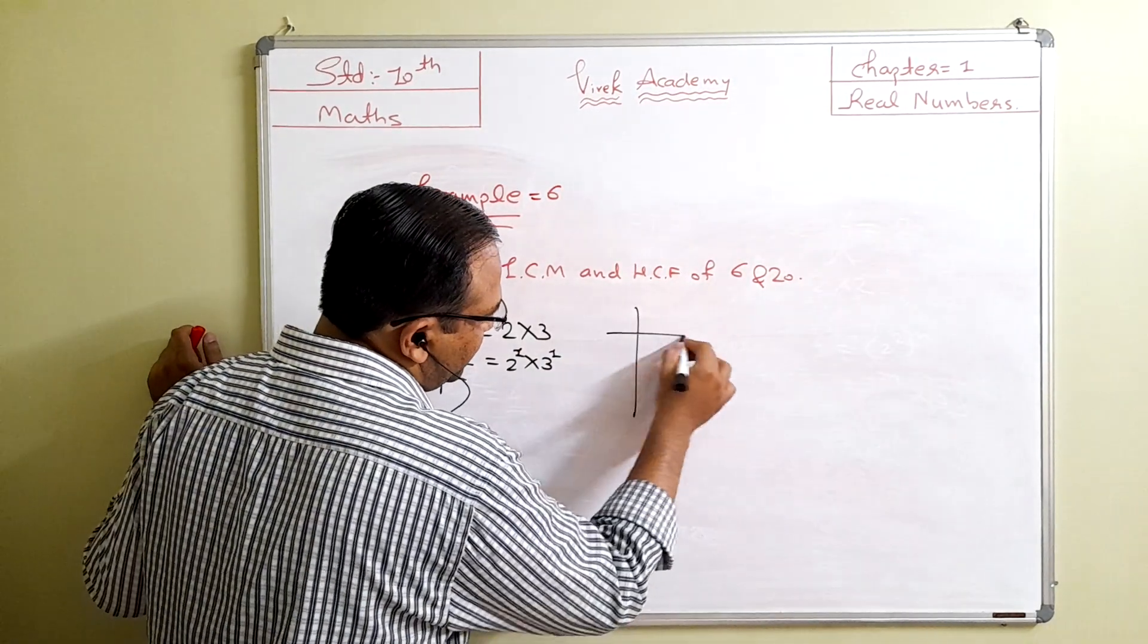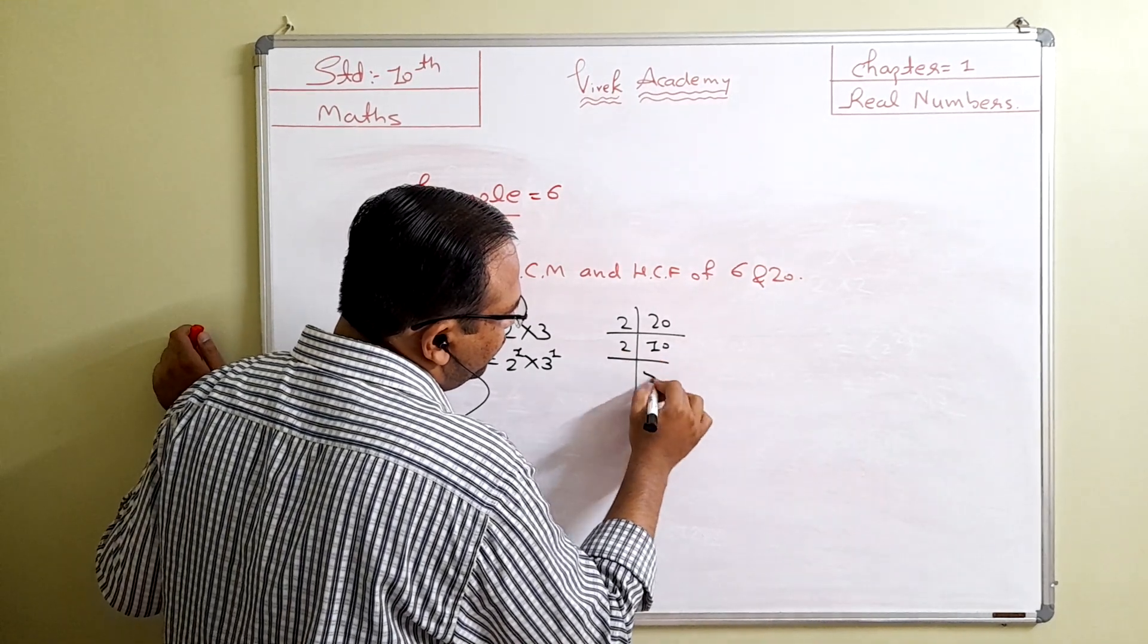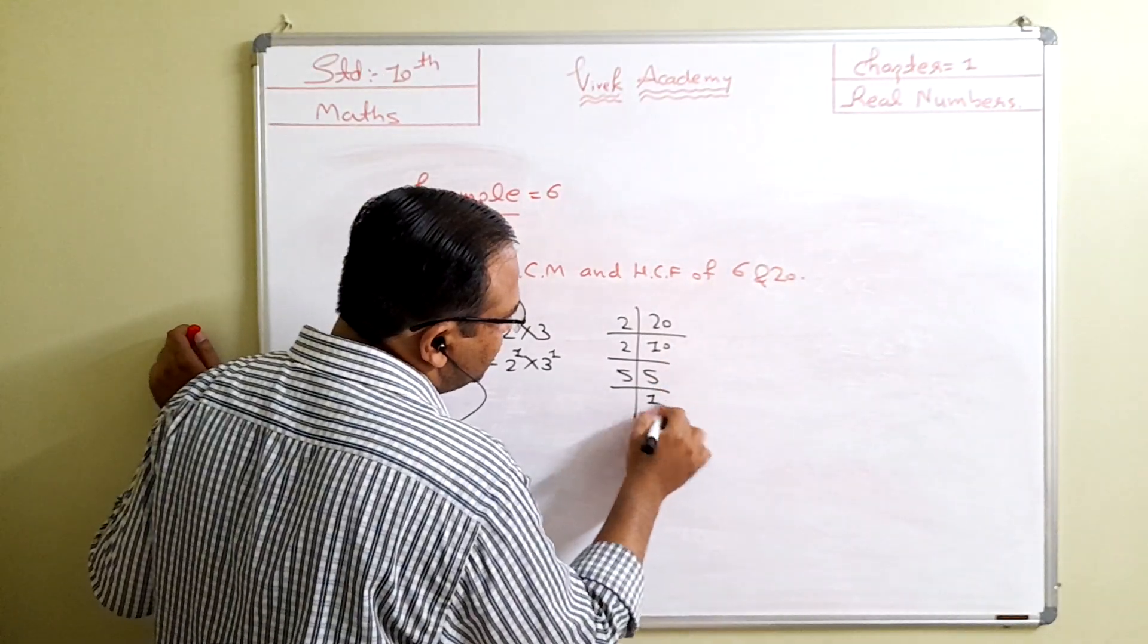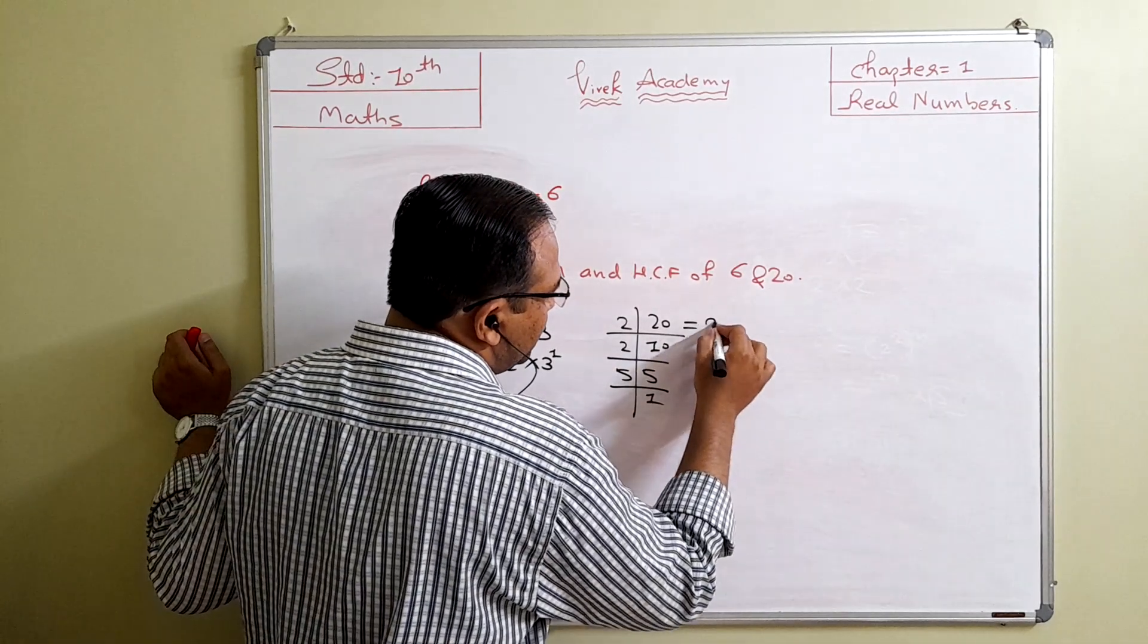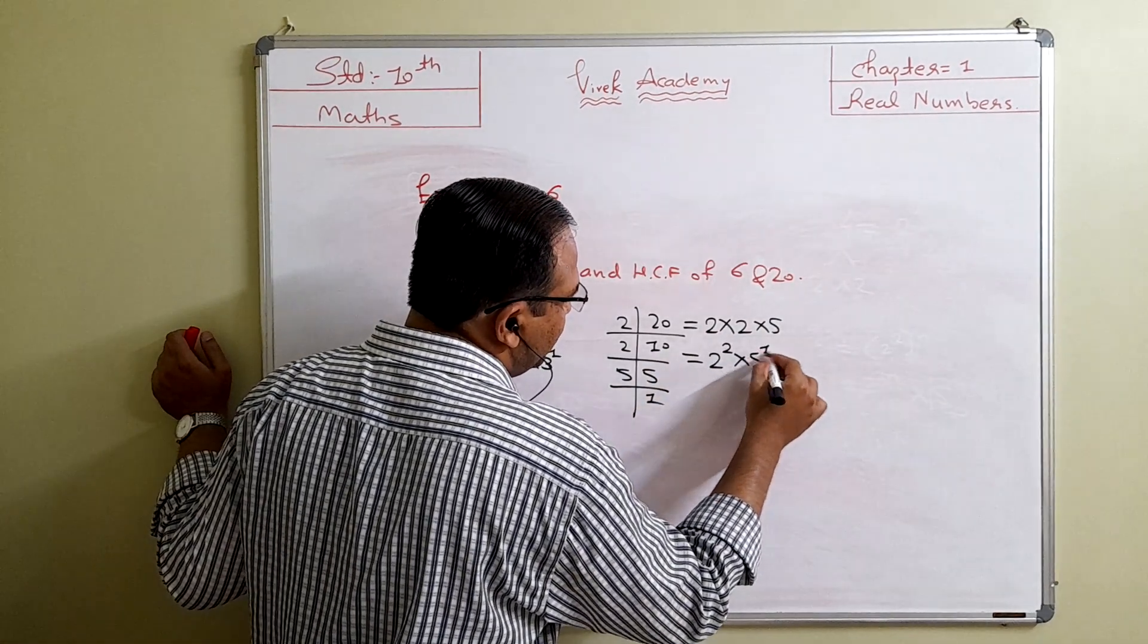Factors of 20: 2 times 10 is 20, 2 times 5 is 10, 5 times 1 is 5. So the factors of 20 are 2 times 2 times 5. 2 is coming 2 times, 5 is coming 1 time.